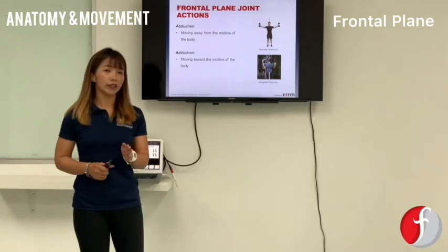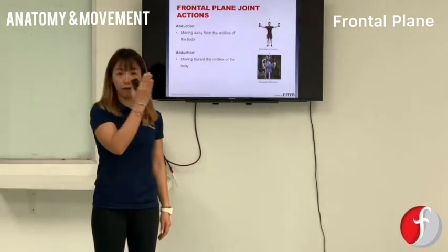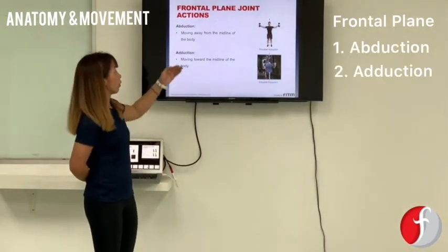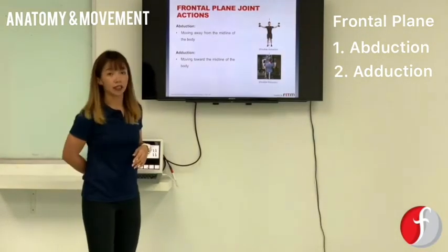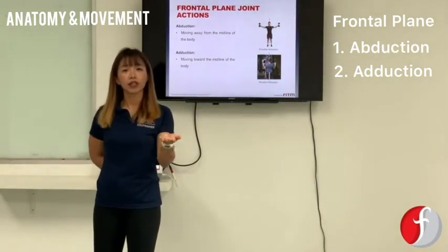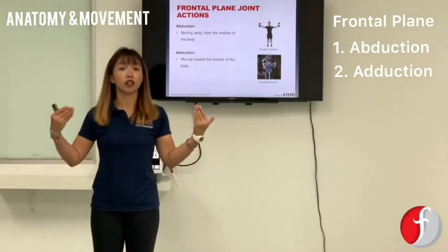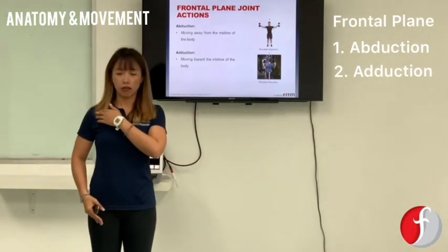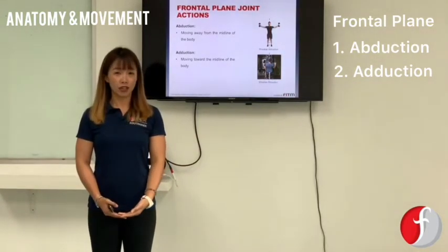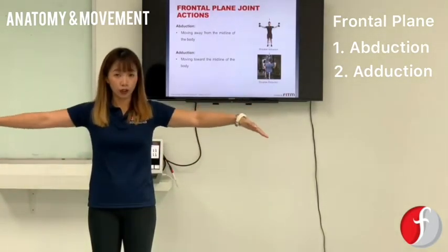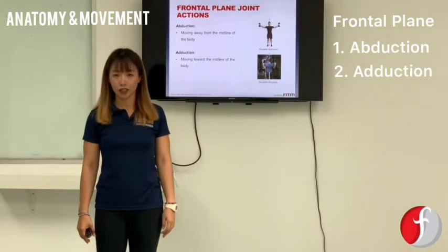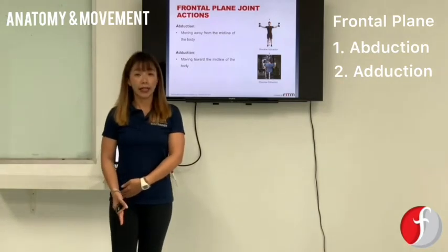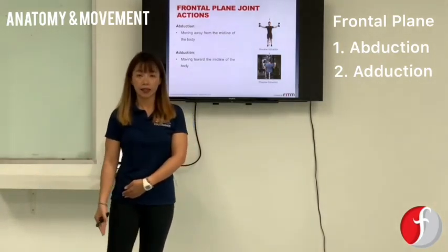Next, let's look into the frontal plane. The first two movements are abduction and adduction, which happen in the shoulder joint and also the hip joint. To abduct your shoulder joint is to take it away from your body — when you perform shoulder abduction it looks like this. Coming closer to your body, we call that shoulder adduction. For your hips, moving your leg away from your body is hip abduction, and bringing it back is hip adduction.